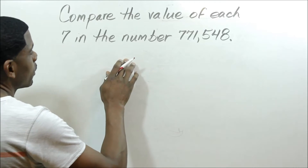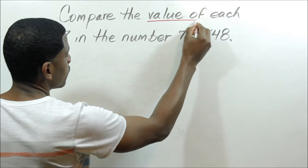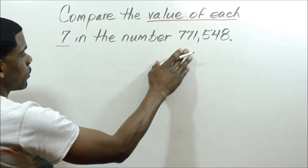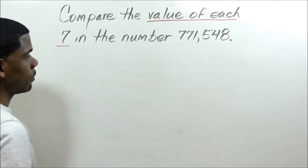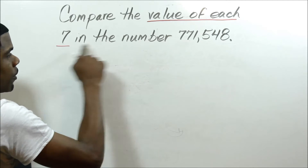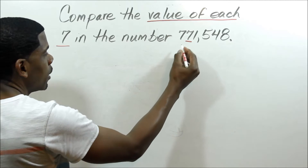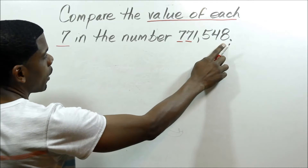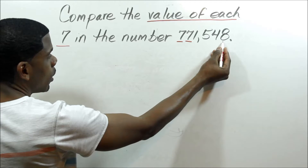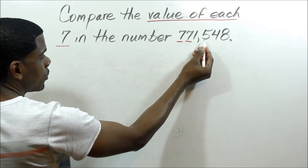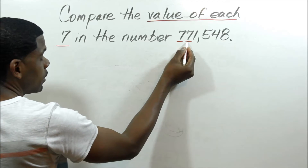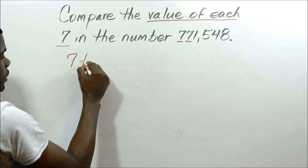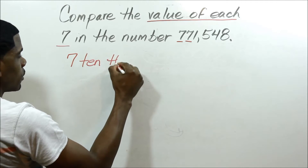So here we have the value of each 7 in the number 771,548. I want to find the value of each 7 — there's a 7 here and a 7 there. The best way to do that is to use your place value. So you would say: this is the 1s, 10s, 100s, 1,000s, 10,000s place. So I can say: 7, 10,000s.